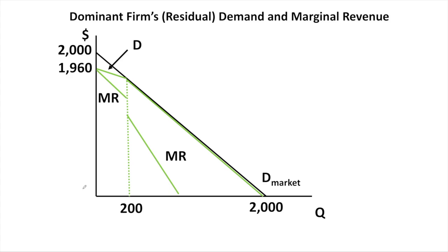Here's a picture of the demand and the marginal revenue for the dominant firm. The dominant firm faces a residual demand curve which lies below the market demand curve out to a quantity of 200. Once you get past a quantity of 200, the market demand curve and the residual demand curve are one and the same. The marginal revenue curve lies below the demand curve and has two segments with a break at a quantity of 200.